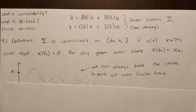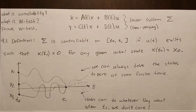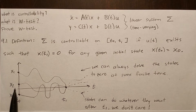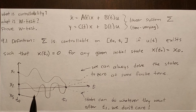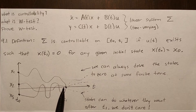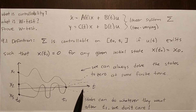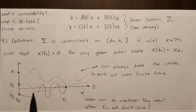What that means is that if we start in any initial state — say we have three different state variables and we start in some random state — then at a finite time T1, we can drive all of these states to 0 at the same time. We don't really care what the states do afterwards; they don't have to stay at 0. Controllability is all about whether we can get the states to go to 0 at time T1.